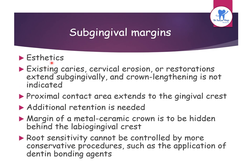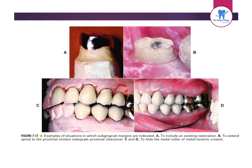Subgingival margins are indicated for aesthetics, existing caries, cervical erosion or restorations extending subgingivally when crown lengthening is not indicated, proximal contact areas extending to the gingival crest, when additional retention is needed, to hide the metal collar of a metal ceramic crown, and when root sensitivity cannot be controlled by more conservative procedures such as dentine bonding agents.